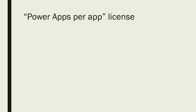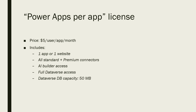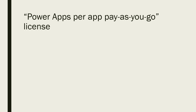The PowerApps per-app license is $5 per user per app per month. It includes one app or one website, all standard plus premium connectors, AI Builder access, full Dataverse access, a Dataverse DB capacity of 50 MB, Dataverse file capacity of 400 MB, and managed environments. The PowerApps per-app pay-as-you-go license is $10 per active user per app per month.